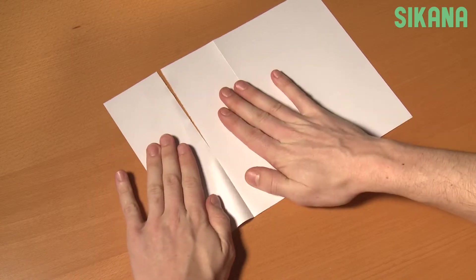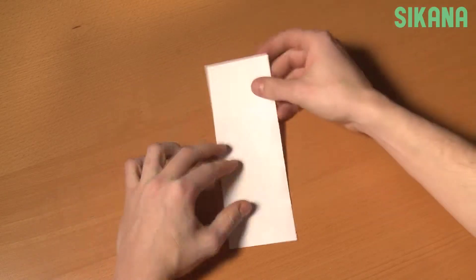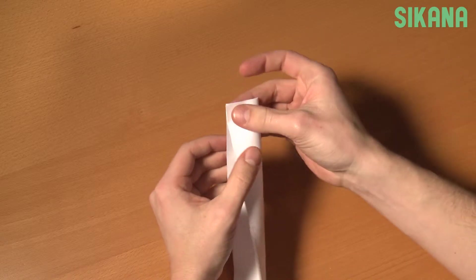Fold in the opposite direction and then cut it. Use scissors to cut. Now fold it in half.